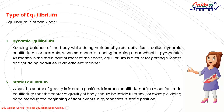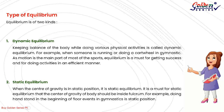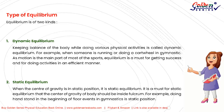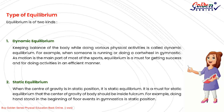Types of Equilibrium. There are two kinds. 1. Dynamic Equilibrium: keeping balance of the body while doing various physical activities is called dynamic equilibrium — for example, when someone is running or doing a cartwheel in gymnastics. As motion is the main part of most sports, equilibrium is a must for success and for doing activities efficiently. 2. Static Equilibrium: when the center of gravity is in a static position. The center of gravity must be inside the base — for example, doing a handstand at the beginning of floor events in gymnastics.